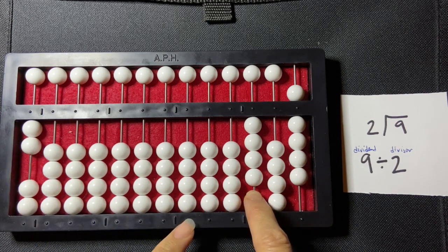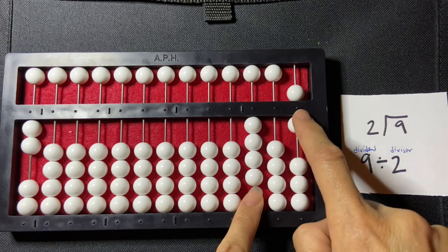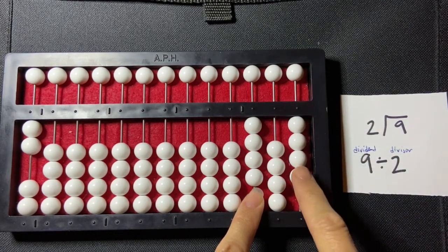4 times 2 is 8 so I'm going to subtract 8 from my dividend. 1, 2, 3, 4, 5, 6, 7, 8.